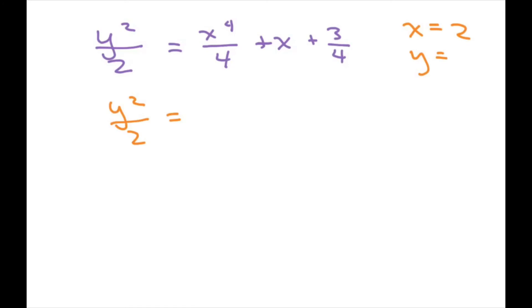So then we get 2 to the 4th, divided by 4, plus 2, plus 3/4ths.